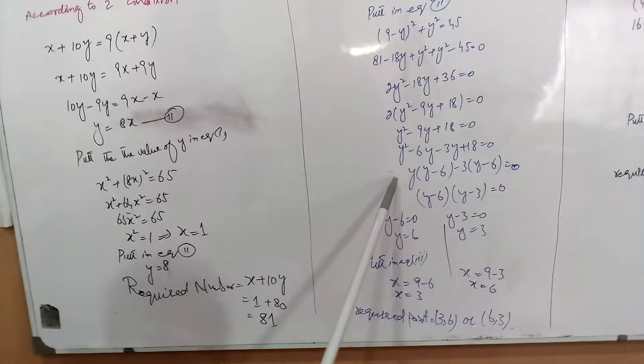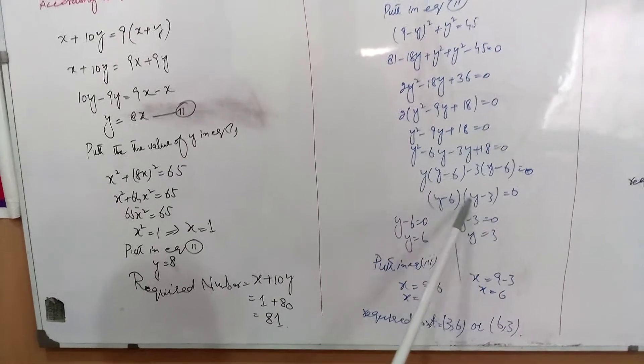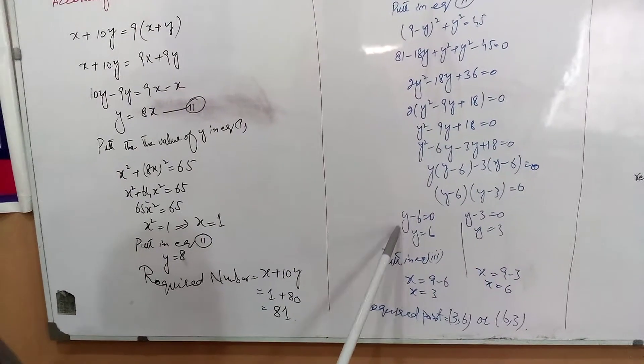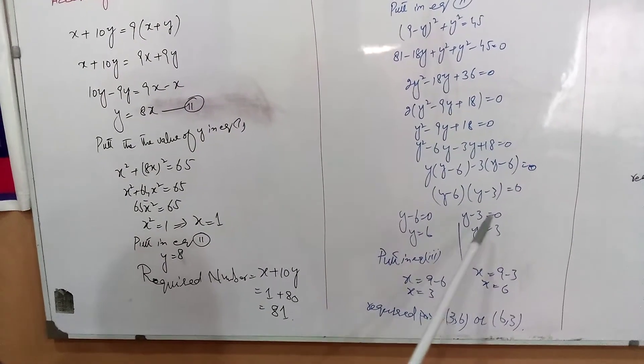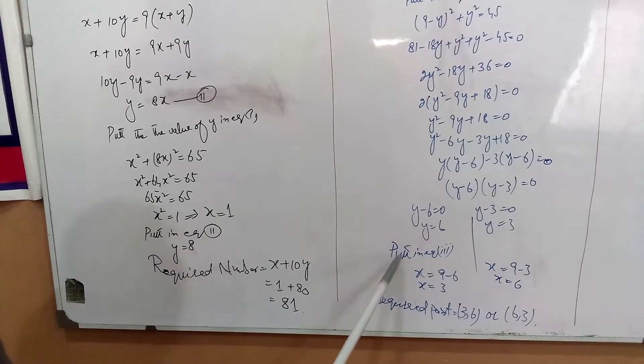Factoring the quadratic, we get y minus 6 into y minus 3 is equal to 0. So y is equal to 6 or y is equal to 3.